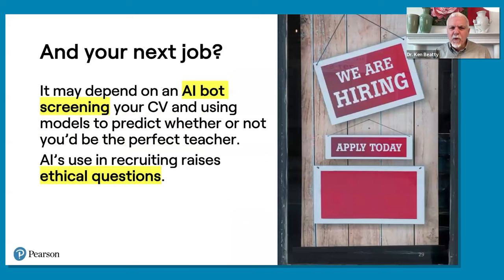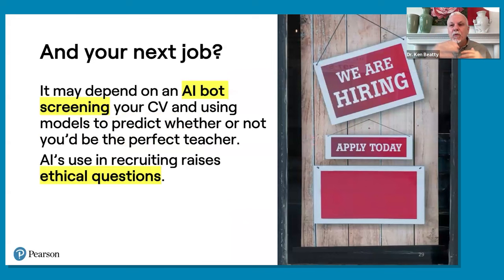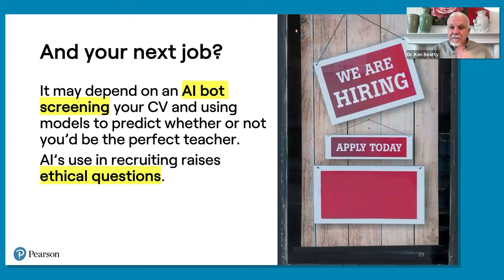What about the next job? One curious thing now with artificial intelligence is that when you send a CV in for a job, it's probably not a human being looking at it — this is so widespread and so common. AI programs search for keywords and sort through applications, saving companies huge amounts of time. But if you're applying for a teaching job somewhere else, are you getting a fair review? You may even be using AI to write your application, so it gets very complicated and raises ethical questions. Some states have started to address this altogether.